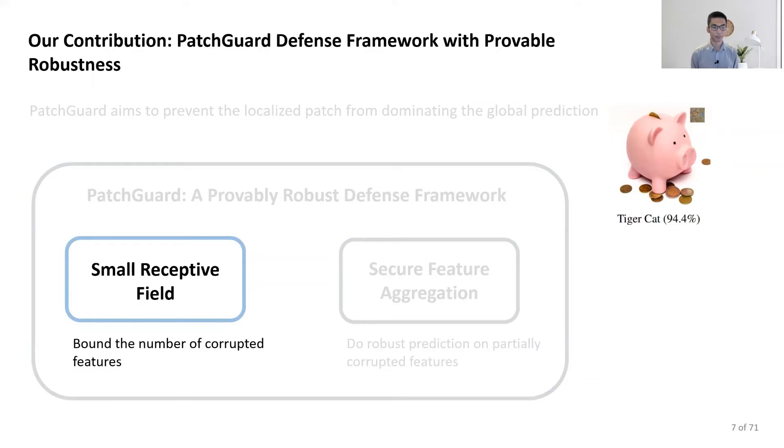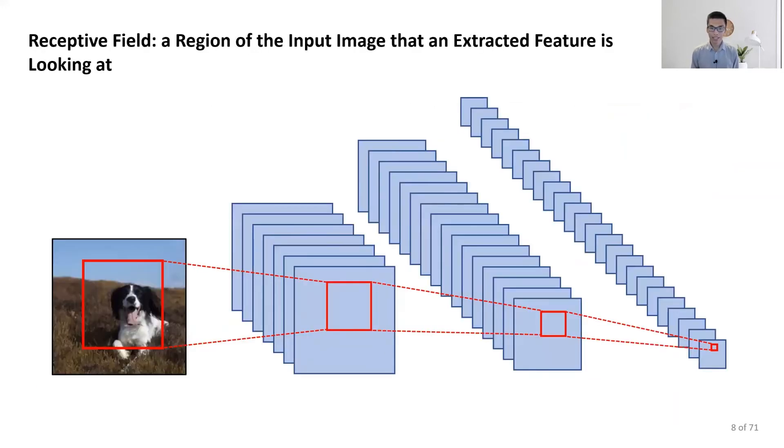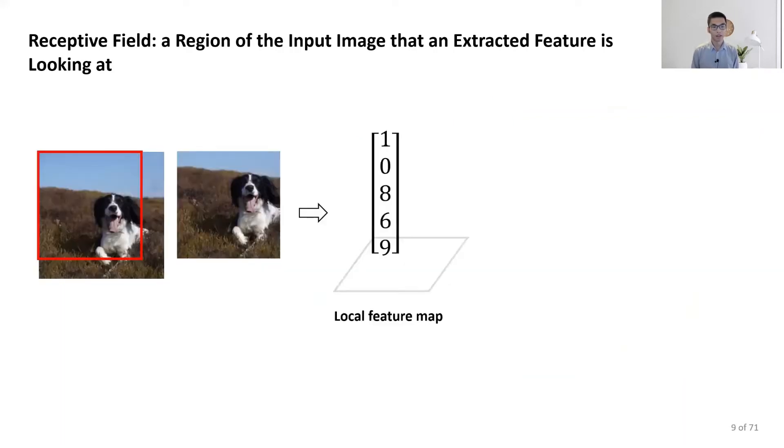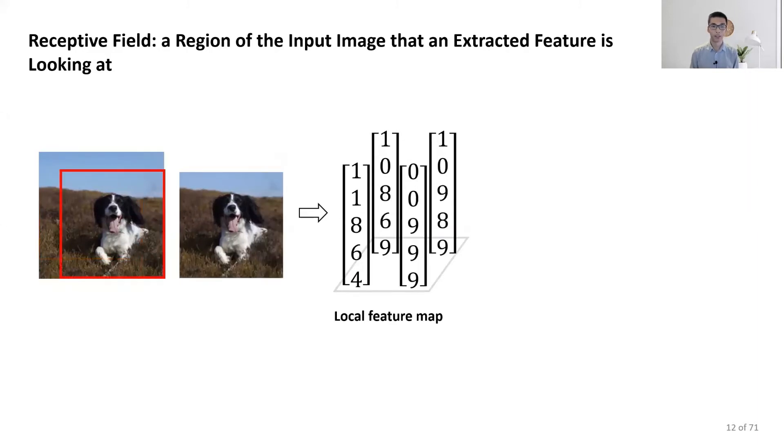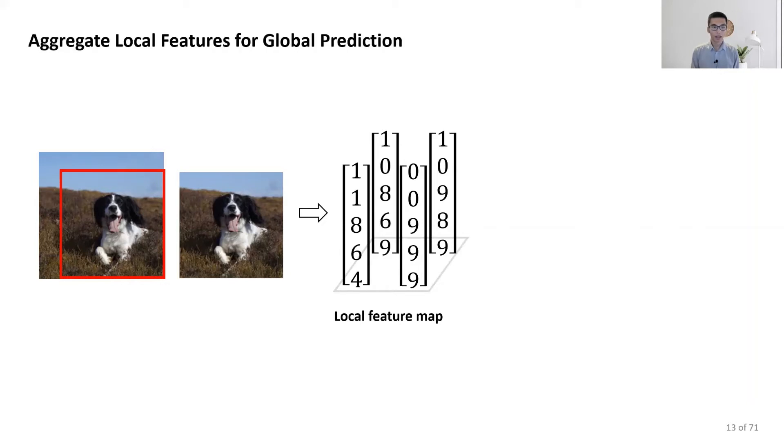Start with the small receptive view. The receptive view is the region of the input image that an expected feature is looking at. Here, the first feature looks at the left top corner of the image, the remaining features look at different parts of the image. We call each feature a local feature because each of them looks at part of the image instead of the entire one.